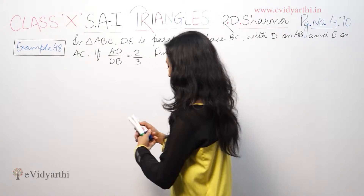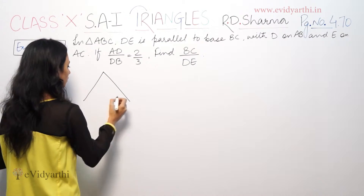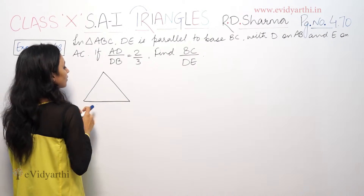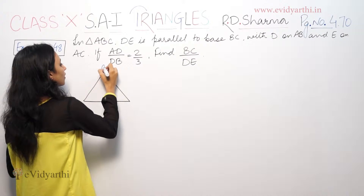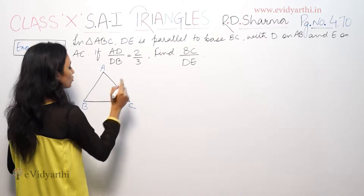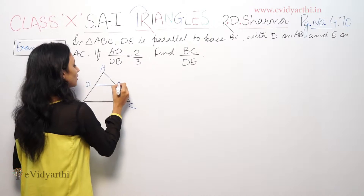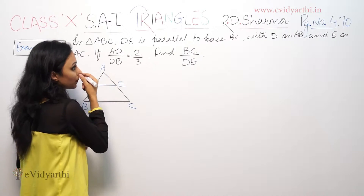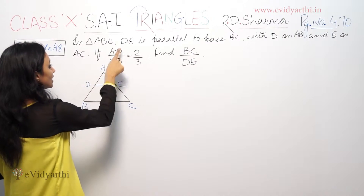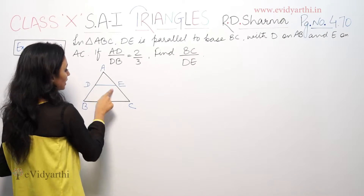In triangle ABC, DE is parallel to base BC. We have D on AB and E on AC. AD upon DB is 2 upon 3. Find BC upon DE.